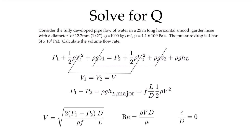For our second type of problem, we take the same pipe — nominally half-inch, 25-meter-long smooth garden hose — with the same fluid properties. Except now we say the pressure drop is 4 bars, or 4 times 10 to the 5 pascals, and the question is to calculate the volume flow rate. As before, it's fully developed flow so we cancel the kinetic energy terms, and it's a horizontal pipe so we cancel the gravitational terms. However, now I don't know the velocity, so I cannot directly solve for the Reynolds number to get a friction factor.